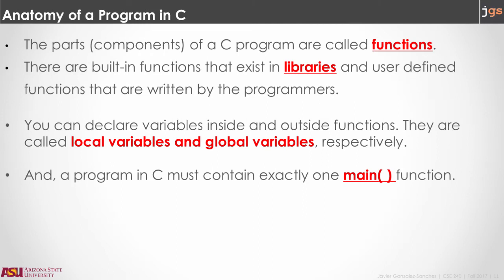Programs in C are collections of functions. Functions are what we call methods in Java. Some functions are defined by the programmer and there are functions in libraries. Also, we can use variables and there are local variables inside of functions and global variables. Global variables are variables that we declare outside of any function. Finally, like in Java, it is mandatory to have a function with the name main and that is the entry point for the program.